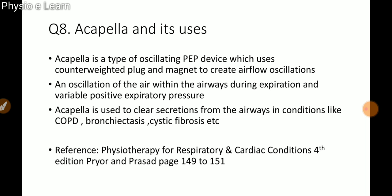Question eight: Acapella and its uses. Acapella is a type of oscillating positive expiratory pressure device that uses a counterweighted plug and magnet to create airflow oscillations — oscillation of air within the airway during expiration and variable positive expiratory pressure. Acapella is used to clear secretions from the airways in conditions like COPD, bronchiectasis, and cystic fibrosis.